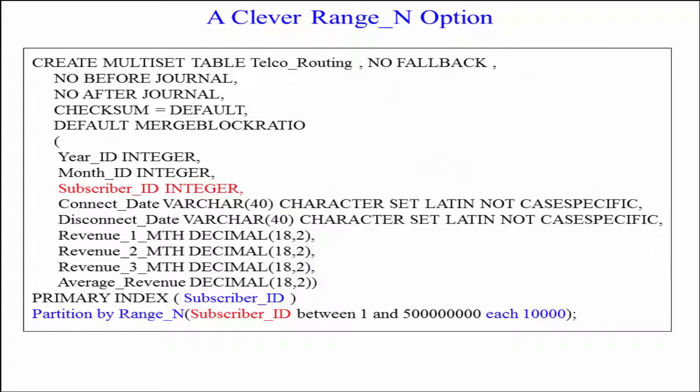Here's one you can take to the bank with you. You're going to be saved here. You can send your commission checks to Teradata Tom Incorporated. Now we've got our table, we've got all of our columns and our data types. We're partitioning by a RANGE_N on Subscriber_ID where Subscriber_ID is between 1 and 500 million. Lot of subscribers here, each interval is 10,000.